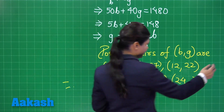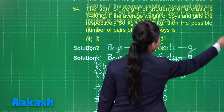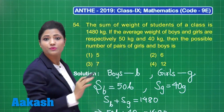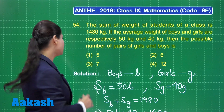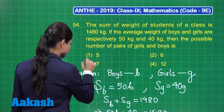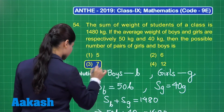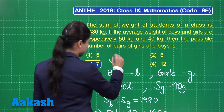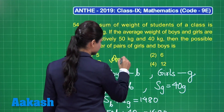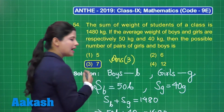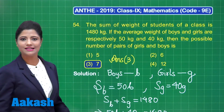When you observe the four options given, you can clearly see 7 is present in option number 3. So you can definitely write the answer for this question as option 3. I hope this question is clear to you.